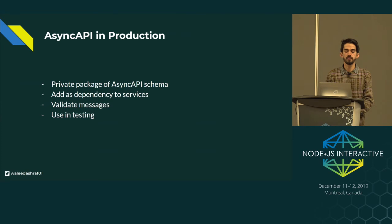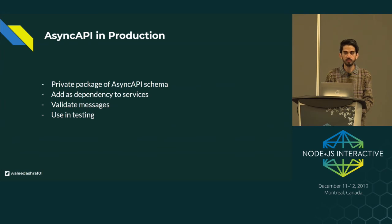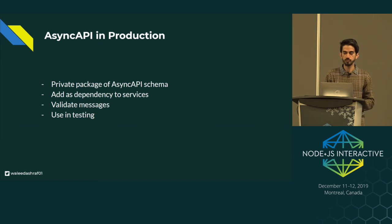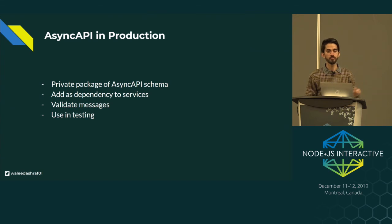We started using it in production. We made a private package of our AsyncAPI schema — Kafka and MQTT schemas — pushed them into a private repo on Verdaccio, and added it as a dependency in the services, then used the validator to validate the messages. We also do it on runtime in production for all messages coming through the client side. But for internal Kafka communication, we only do it when running unit tests or integration tests between services, not in the live production environment.